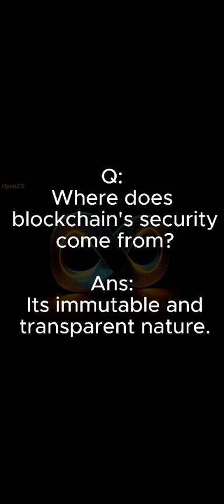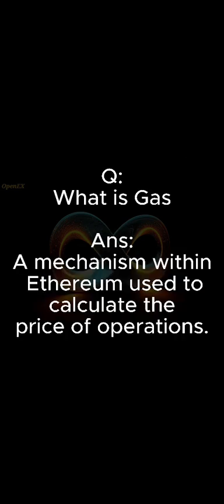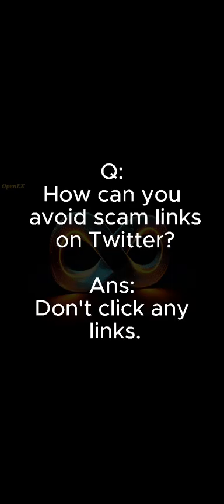Do the tokens on a testnet have value? The answer is no. Where does blockchain security come from? The answer is its immutable and transparent nature. What are digital signatures? The answer is a way to authenticate and ensure the integrity of digital documents or messages using cryptography. What is gas? The answer is a mechanism within Ethereum used to calculate the price of operations. How can you avoid scam links on Twitter? The answer is don't click on any links. What is Web3? The answer is a JavaScript library used for the development of decentralized applications.